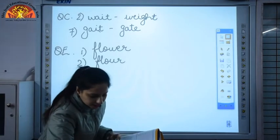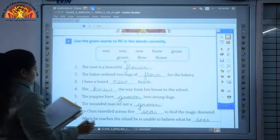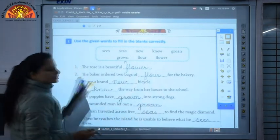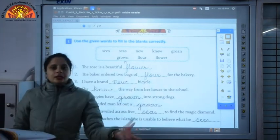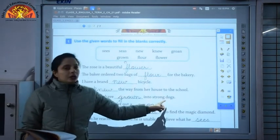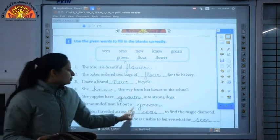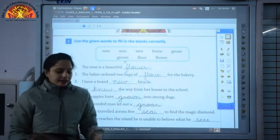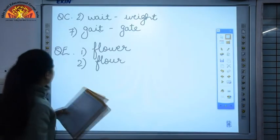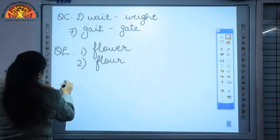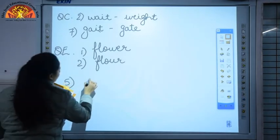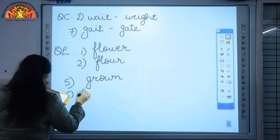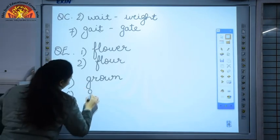Now we'll take fifth one. The puppies have grown into strong dogs. Over here G-R-O-W-N shows growth of something, grown into strong dogs. The wounded man let out a groan, it's a sound which comes when you are in pain. Fifth one will be the puppies have grown, and sixth one will be the wounded man let out a groan.